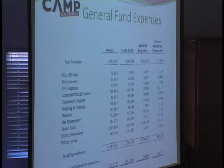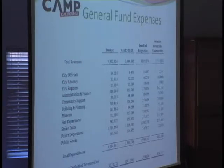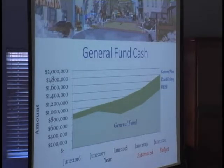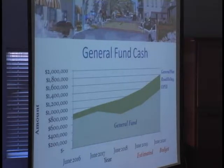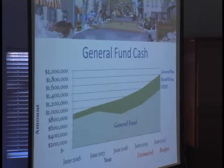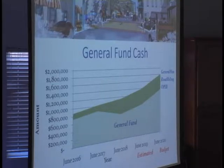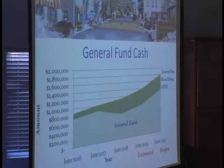Our general fund expenses were projected to close at approximately $200,000 positive, primarily thanks to understaffing in the police department — the city gets to close positive, net of what we had to pay the sheriff during that time. Our general fund cash projection looks like we're going to close at about 1.4 million at the end of this year.